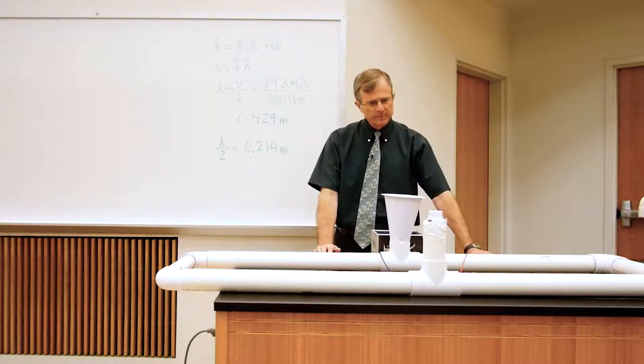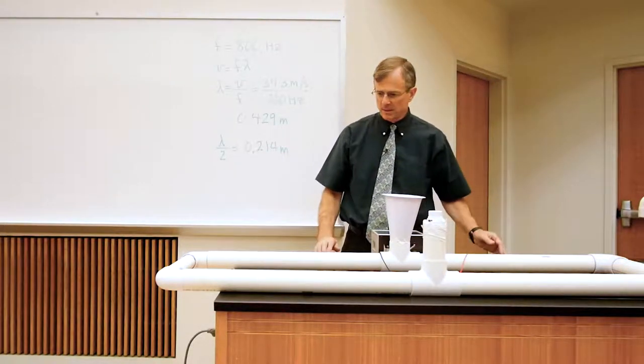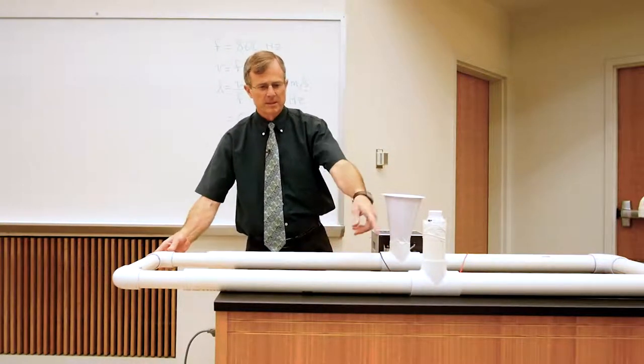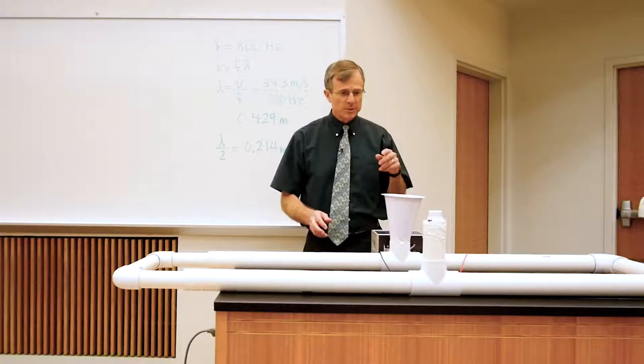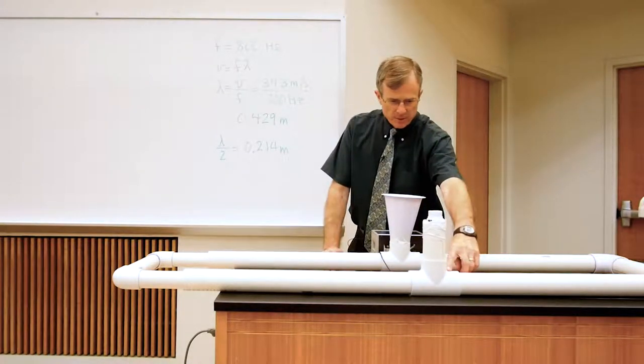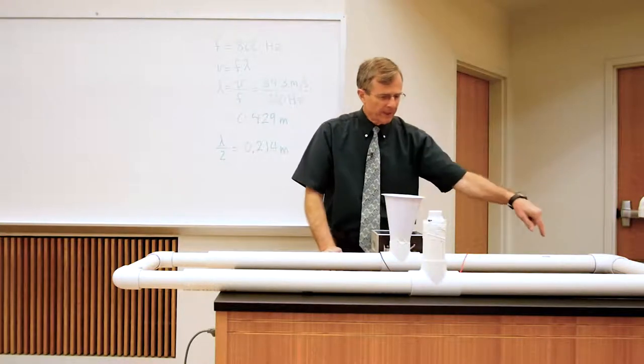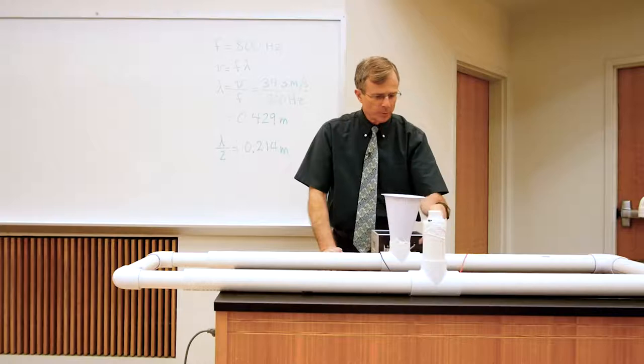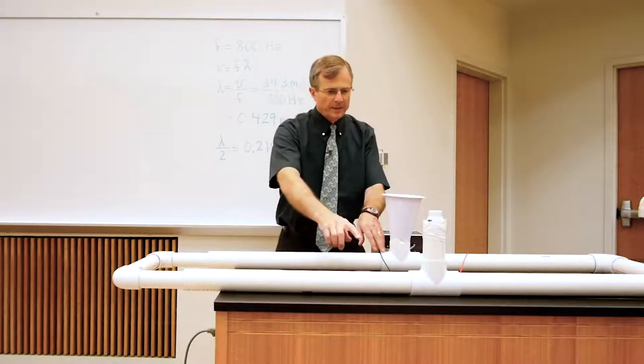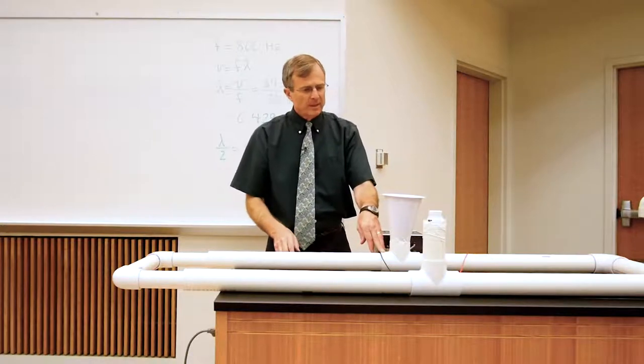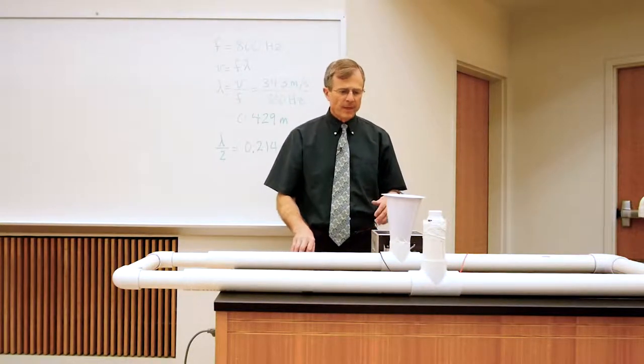And so what happens is we're able to actually vary the length of one of these loops in order to vary the path length difference. So this would be a certain number of wavelengths, the sound going from here all the way around this loop to here. And this may be a different number of wavelengths coming around the other side.